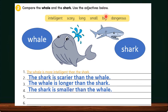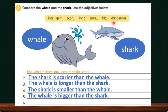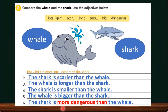Big becomes bigger. Which animal is bigger? The whale is bigger than the shark. The last sentence uses dangerous. When we change it to comparative form, it becomes more dangerous. Which animal is more dangerous? It is the shark. The sentence is: the shark is more dangerous than the whale. Well done.